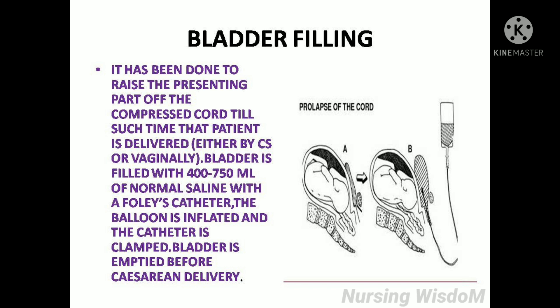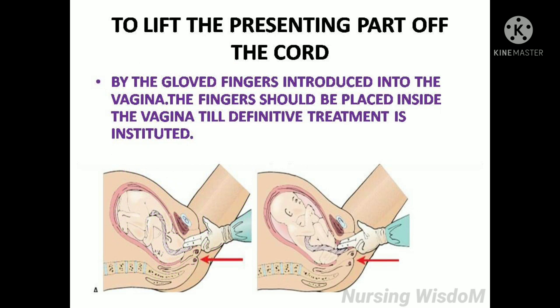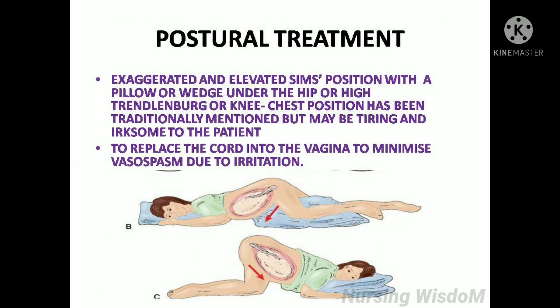Bladder filling: This is done to raise the presenting part off the compressed cord until the patient is delivered either by caesarean section or vaginally. The bladder is filled with 400 to 750 ml of normal saline using a Foley catheter; the balloon is inflated and the catheter clamped. The bladder is emptied before caesarean delivery. To lift the presenting part off the cord, a gloved finger is introduced into the vagina and kept in place until definitive treatment is instituted. The exaggerated Sims position with a pillow or wedge under the hip, or the knee-chest position, has been traditionally mentioned. The cord should be replaced into the vagina to minimize vasospasm due to irritation.